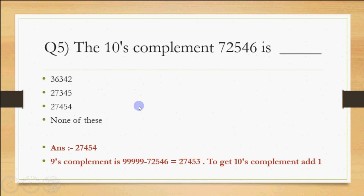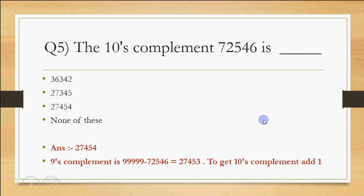To summarize: for 10's complement, first find the 9's complement by subtracting each digit from 9, then add 1. Similarly, for octal numbers, subtract each digit from 7 to get 7's complement, then add 1 for 8's complement. For hexadecimal, subtract each digit from 15 to get 15's complement, then add 1 for 16's complement. That's how you find complements for any base.